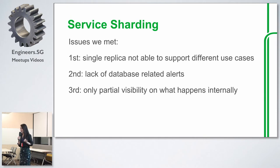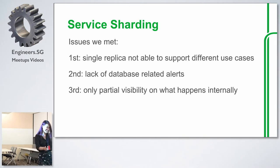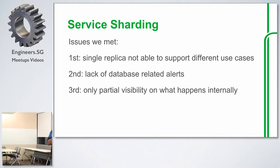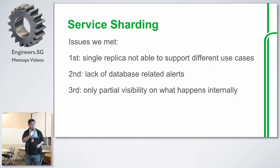Lupe handed over to Jack to show how they solved these problems and what the current stage and next moves are. Jack — database engineer at Grab — explained that for replication sharding: since one replica couldn't support all operations on it, they created multiple replicas for one master, each serving different purposes.